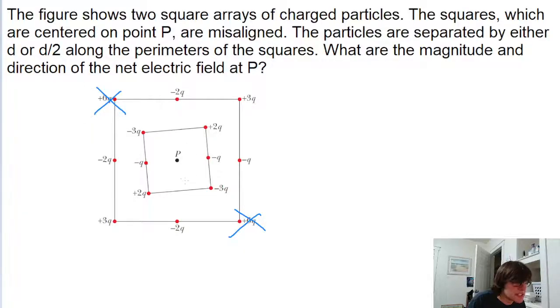So looking at this inner square, there is a negative 3q and a negative 3q on opposite diagonal ends of the square. So those can be ignored. There's a negative q here and another negative q there. Again, equal charges, opposite ends. Same with these two positive 2qs. These negative 2qs cancel out. These positive 3qs cancel out. And all we're left with is this negative 2q and this negative q on the other side.